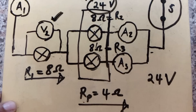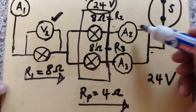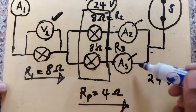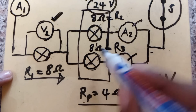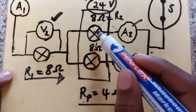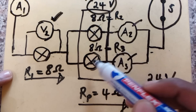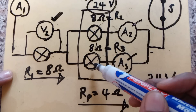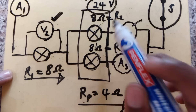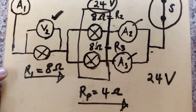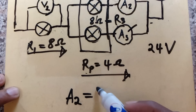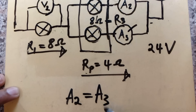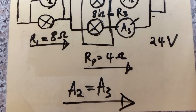The question asks how the readings on ammeter A2 and ammeter A3 compare. Because both resistances in parallel are the same size — 8 ohms and 8 ohms — the current through each branch will also be the same. Therefore, the reading on A2 will be equal to the reading on A3.